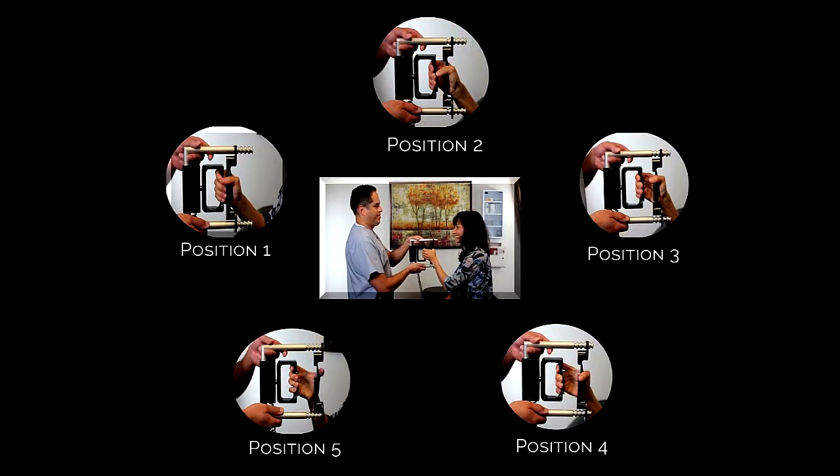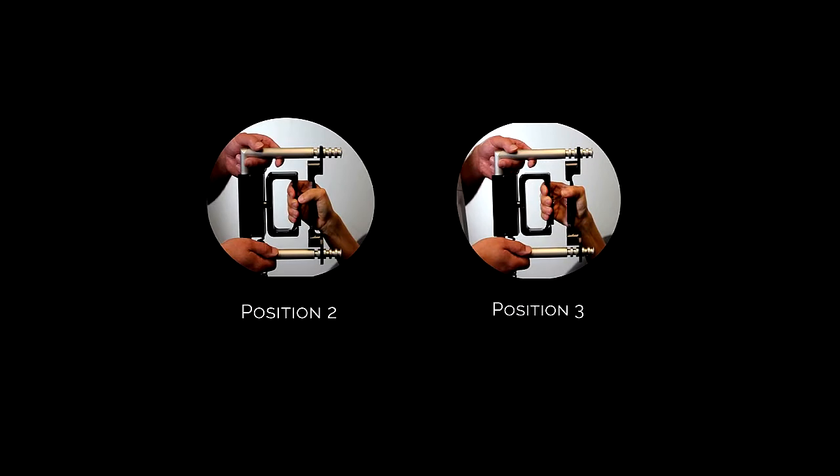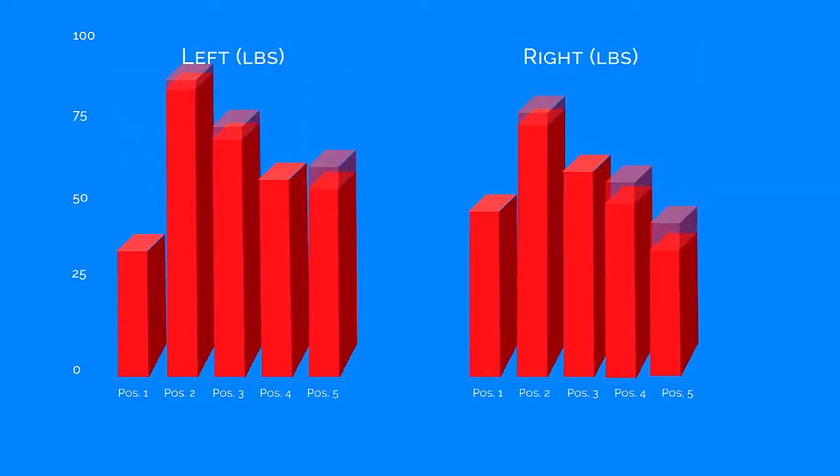By testing all five positions, we can evaluate whether a full effort was given by the individual being tested. If a patient is strongest at position two or three, we know that the individual gave a maximal voluntary effort, and these results can easily be seen in a graph in the report.